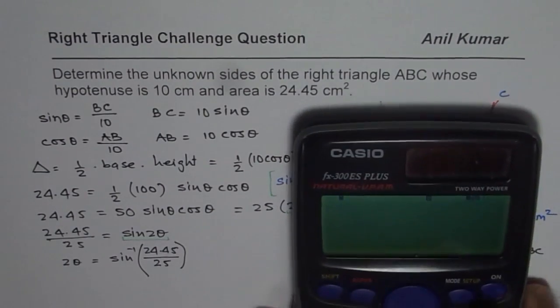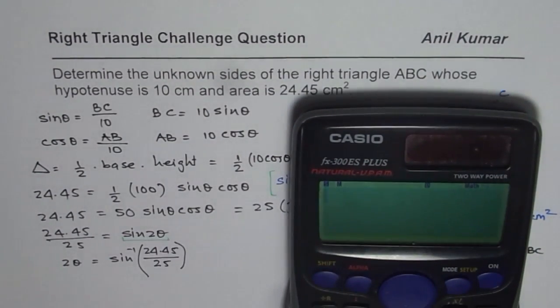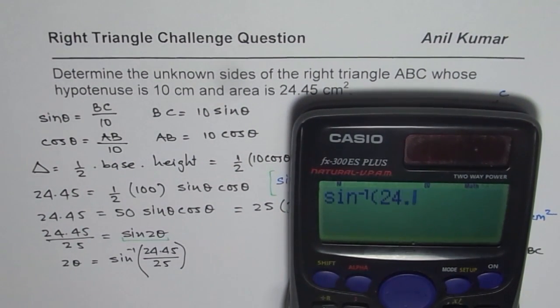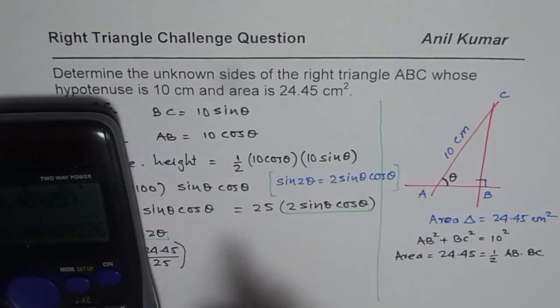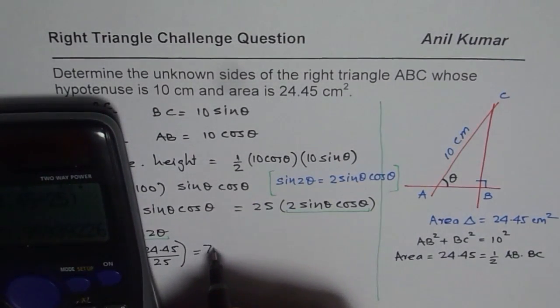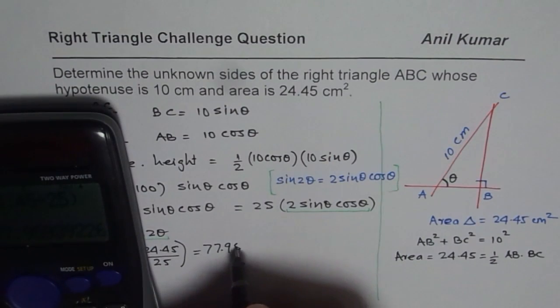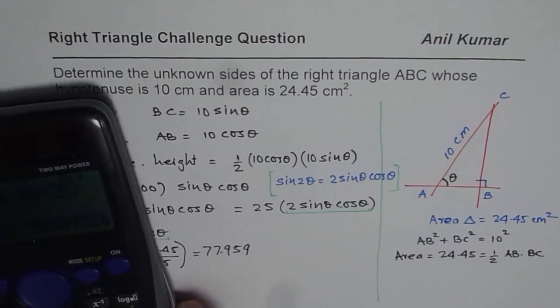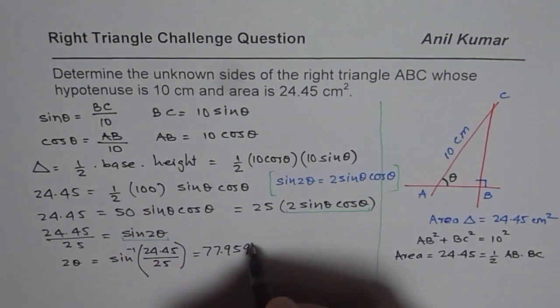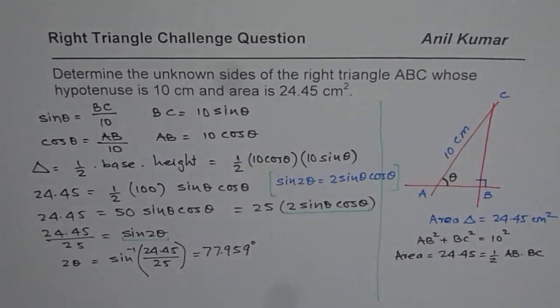So we can use the calculator, second function. And sin inverse within bracket 24.45 divided by 25 equals to. We get angle in degrees. I've set it to degrees. So we'll write this angle as equal to 77.959. Okay. That is enough, right? So that is the angle in degrees. That is 2 theta.